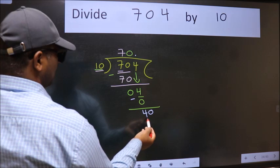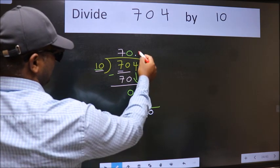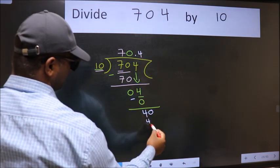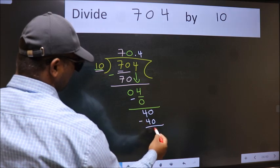So 40. When do we get 40 in 10 table? 10 times 4 is 40. Now we subtract, we get 0.